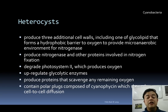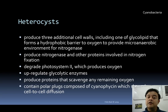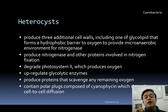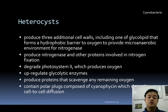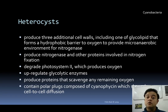Oxygen molecules can render nitrogenase completely futile — nitrogenase cannot function if molecular oxygen is present. Heterocysts have three additional cell walls, including one with glycolipid that forms a hydrophobic barrier to oxygen, providing a micro-anaerobic environment for nitrogenase function. The heterocyst also produces nitrogenase and other proteins involved with nitrogen fixation, making it the key organelle housing these enzymes.